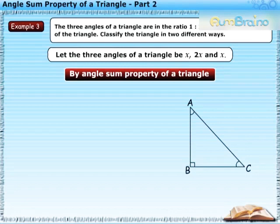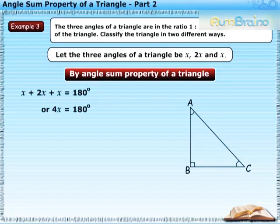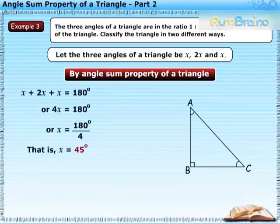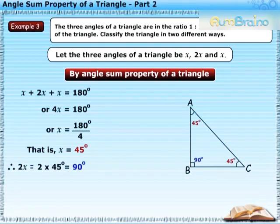By angle sum property of a triangle, X plus 2X plus X is equal to 180 degrees. Or, 4X is equal to 180 degrees. Or, X is equal to 180 degrees upon 4, that is, X is equal to 45 degrees.